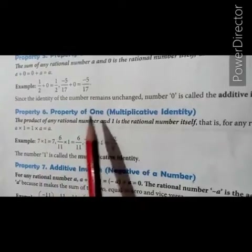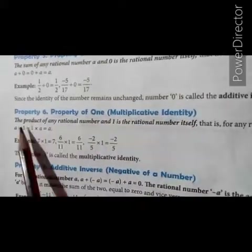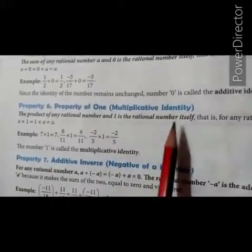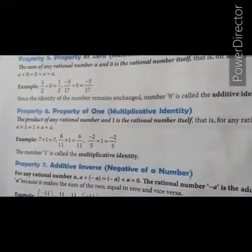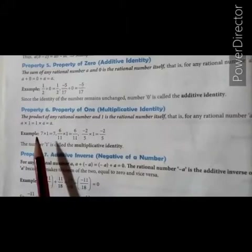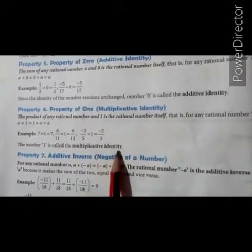Property 6: property of 1, also called multiplicative identity. The product of any rational number and 1 is the rational number itself. That is, for any rational number a, a multiplied by 1 equals to a, or 1 multiplied by a is also equal to a. For example, the product of rational number 7 multiplied by 1 equals to 7. The number 1 is called the multiplicative identity.